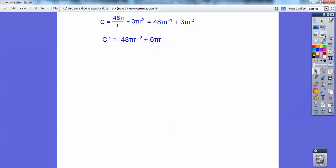Now I set that equal to 0. This negative 48πr⁻² is 48π over r². I added that to the other side. A negative exponent goes down in the denominator. Cross multiply: r² times 6πr gives 6πr³. Divide by 6 and you get r³ equals 8, so r is 2.